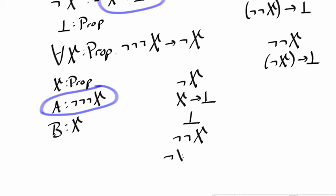So what we're trying to prove is not X implies false. So this means we can assume not X. We need to prove false. At this point we're almost done.